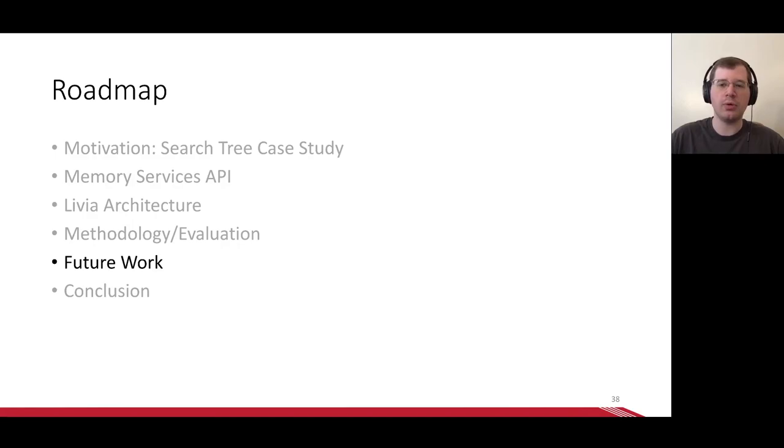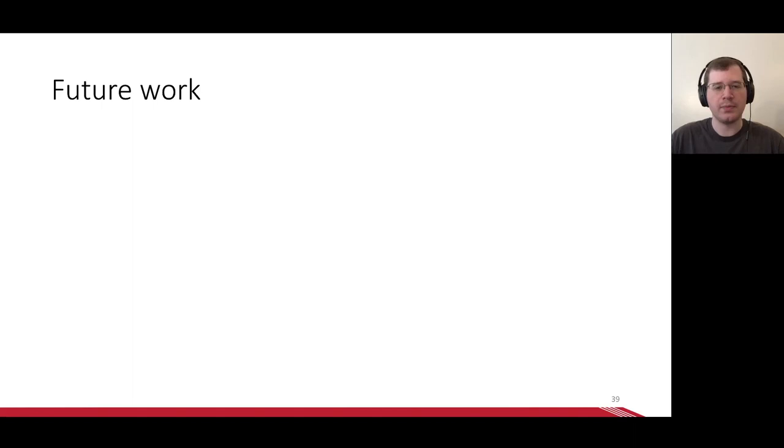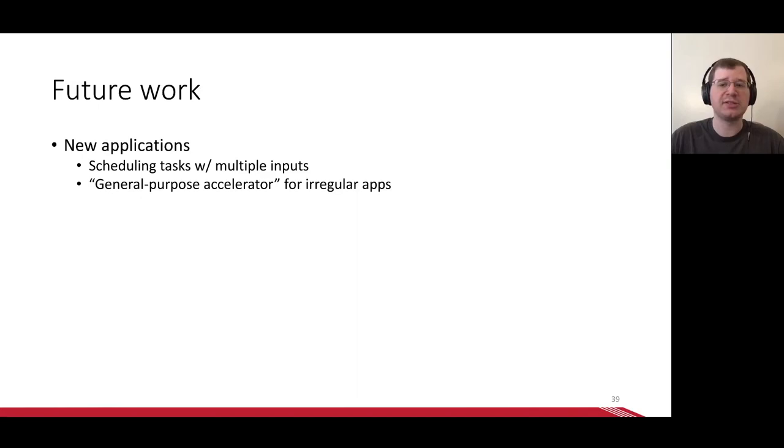So we've seen that Livia gets big speedups on challenging workloads, but what's next? Well, there are three main areas in which we're looking to improve on the current system. The first is applications. As previously mentioned, we currently schedule tasks based off a single piece of data. We'd like to extend this to scheduling tasks based off multiple pieces of data, because some applications rely on operations that fundamentally require multiple inputs. More broadly, we envision Livia becoming a general purpose accelerator for irregular workloads. This can include system tasks like garbage collection, long-running tasks like application-specific cache compression, or just a general accelerator for apps like graph analytics.